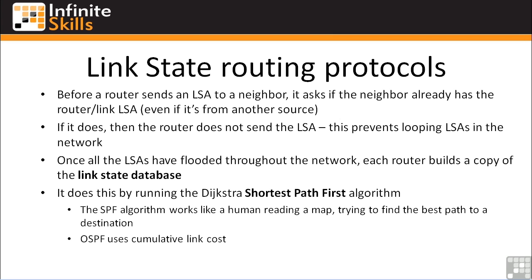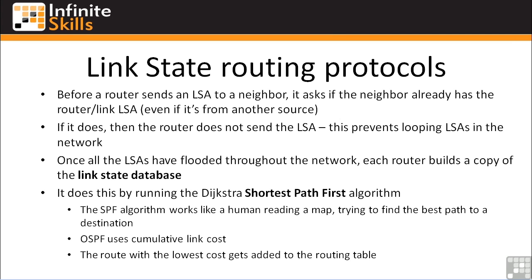OSPF uses cumulative link cost, kind of like spanning tree. Since the router knows about all of the routers and all of the links and has a map of the entire network in its memory, it can say these networks are all connected by 100 megabit LAN links, while this other path — though it has fewer hops and is shorter — runs over 128k ISDN. So I don't want to take that route because I'll be waiting forever; I'll take this longer path around because in the long run it's quicker. Once OSPF, or any link state routing protocol, computes all of these costs, the route with the lowest cost gets added to the routing table, because that's the best shortest path between the two points.